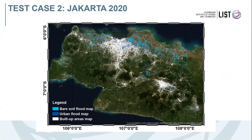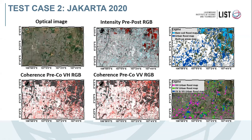We applied this approach to another test case — a flood event this year in Jakarta in January. Here is the final map: in light blue, flood over bare soil; in dark blue, flood in urban areas; and in white, buildings that were not affected by flood. Here is a detail showing that in this urban area we were able to detect flood using coherence, where in the intensity we don't see basically any change.